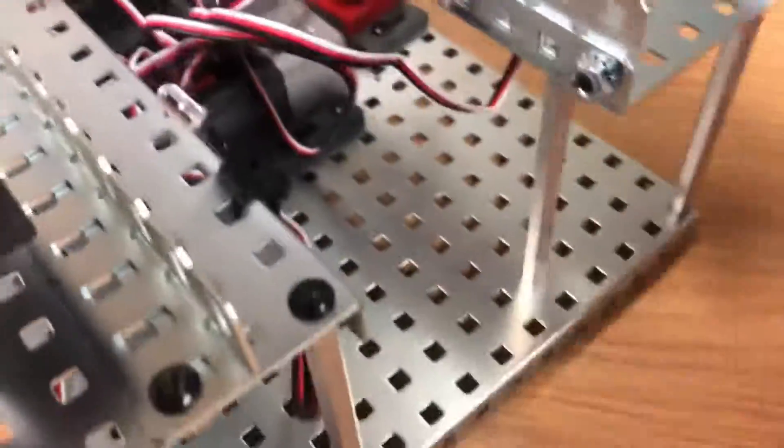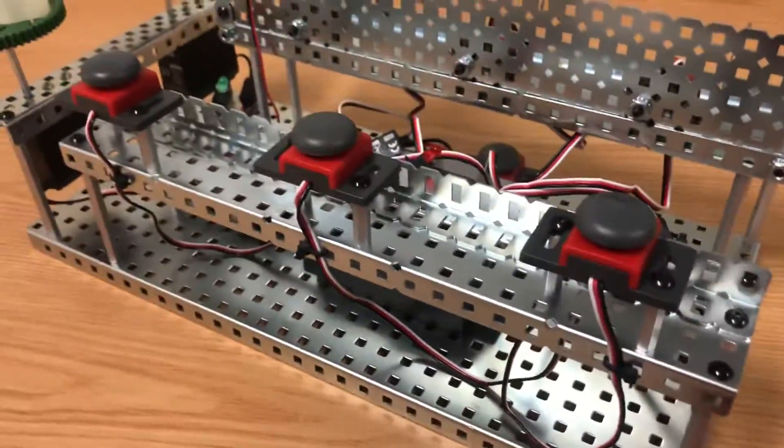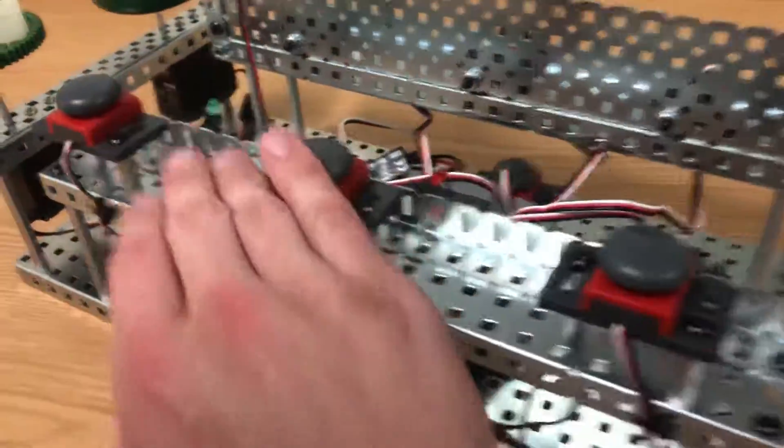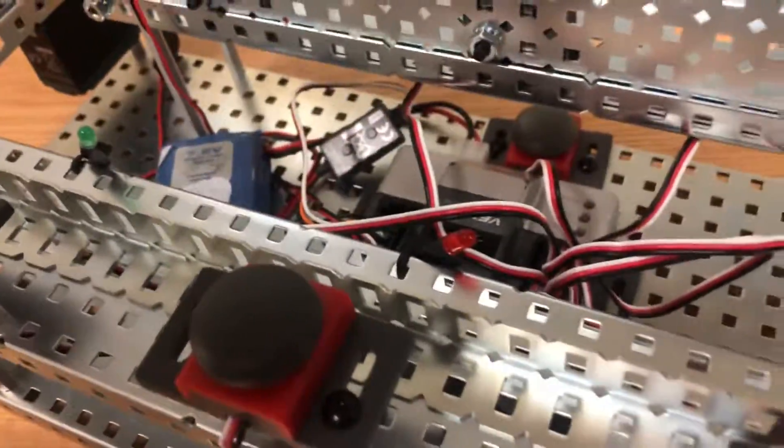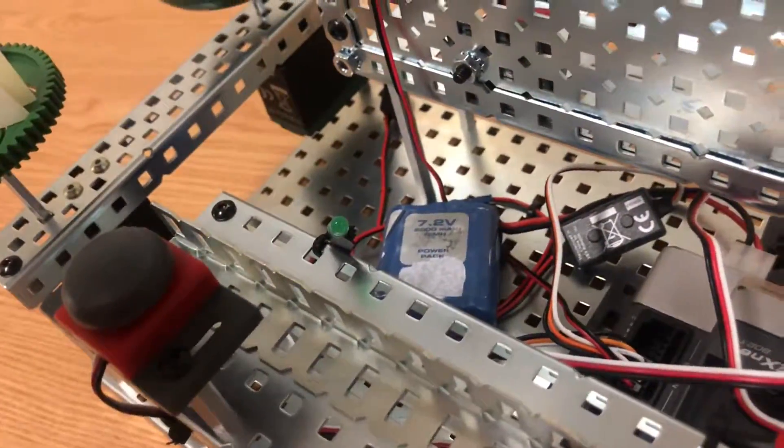But how it works is it's all controlled through the VEX Cortex. There's three contestants. They all have their own push button, and each of the contestants is designated by their color. So there's blue, red, and green.